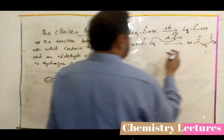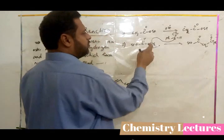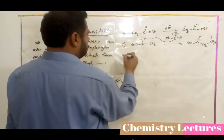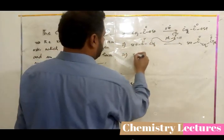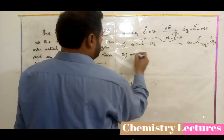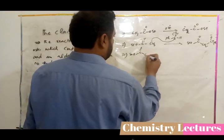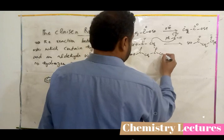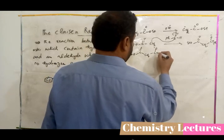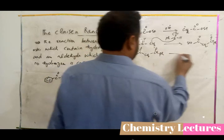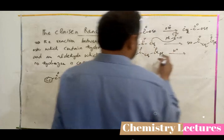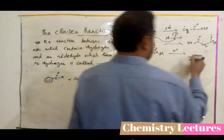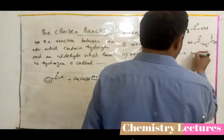A new bond is formed between this carbon and the benzaldehyde carbon group. In the third step, this carbanion will extract a proton from the base and you will get the beta-hydroxy ester product.